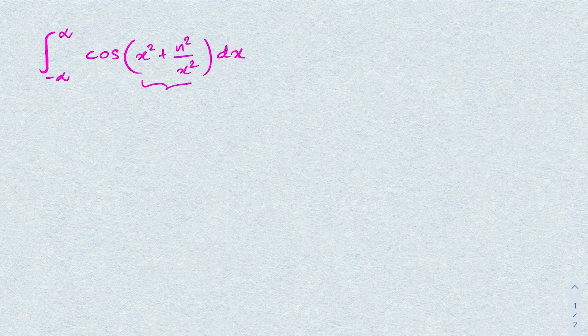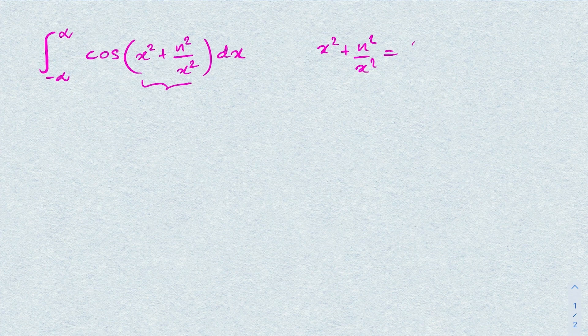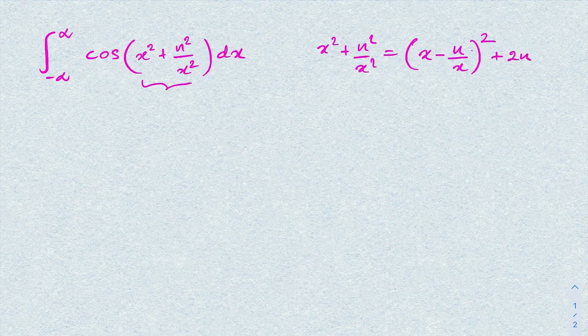The angle of cosine is x² + n²/x². We are going to simplify this expression. We can write x² + n²/x² as a perfect square — specifically (x − n/x)² — and since the middle term gives minus 2n, we add 2n. So our integral becomes the integral from minus infinity to infinity of cosine of [(x − n/x)² + 2n] dx.